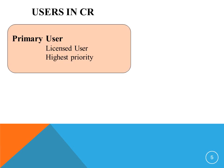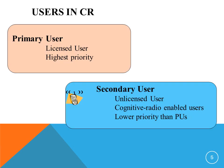There are two types of users in cognitive radio: the primary users and the secondary users. Primary users are those who have exclusive right to a certain frequency band. In other words, they are the license holders, that is, the licensed users. They have the highest priority. There is no need for these users to be aware of cognitive users, and no additional functionalities or modifications are needed for this type of users.